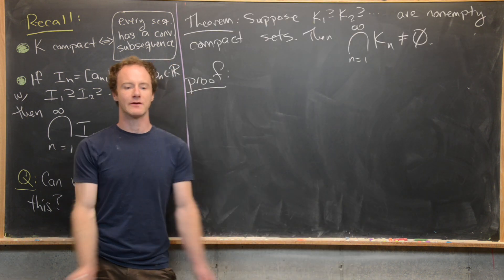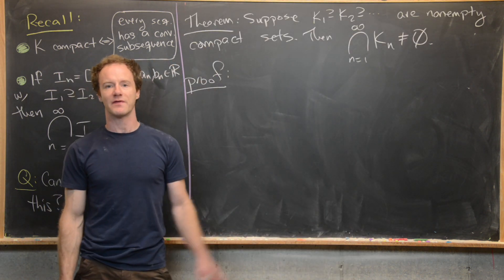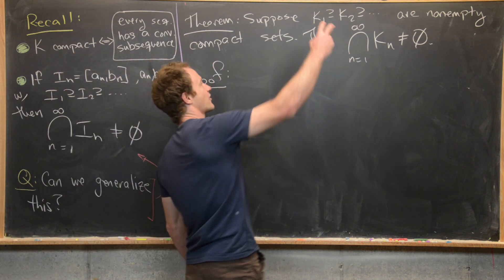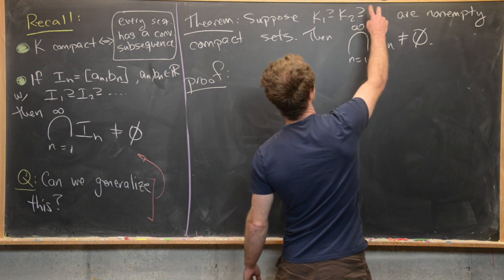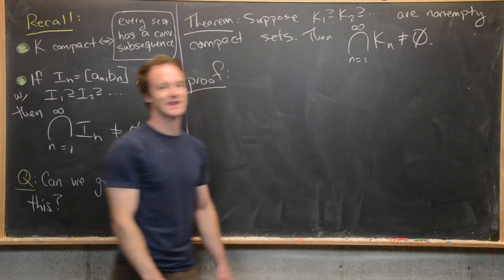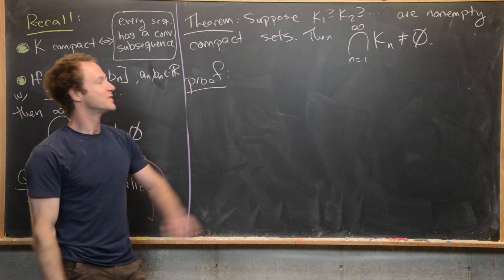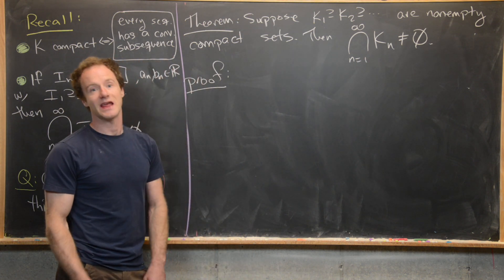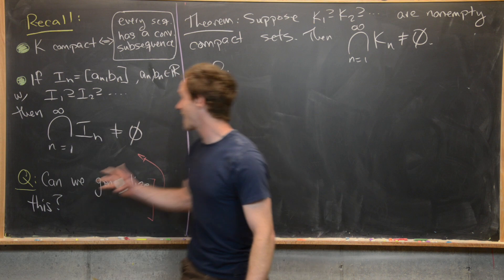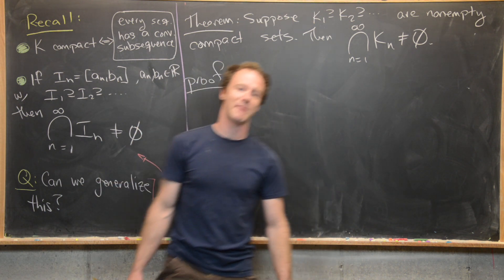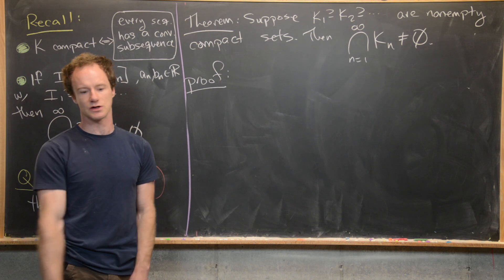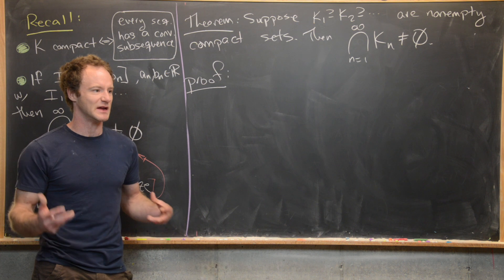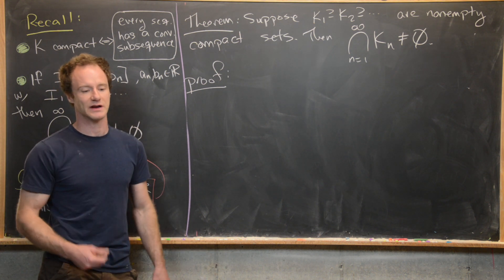Now we're ready for the main result of this video. We want to suppose that we've got this nested sequence of non-empty compact sets: K_1 is compact, it contains K_2 which is compact, which contains K_3, and so on. Then the intersection as n goes from 1 to infinity of K_n is non-empty. This mimics the nested interval theorem but with compact sets instead of closed and bounded intervals — compact sets are the natural generalization.